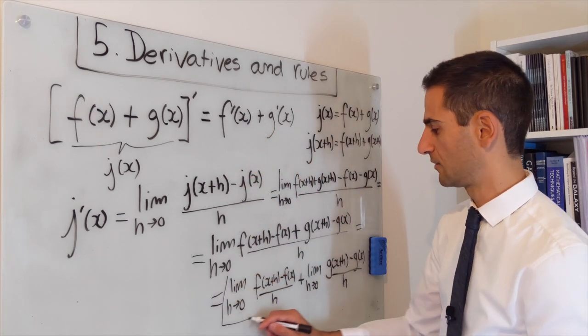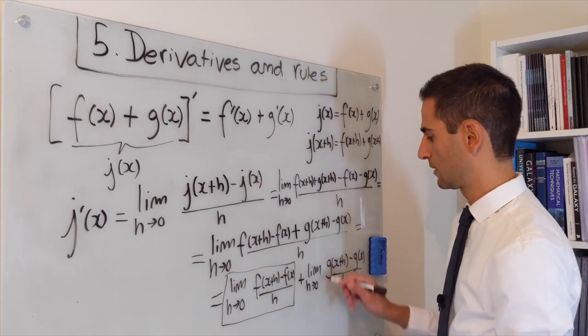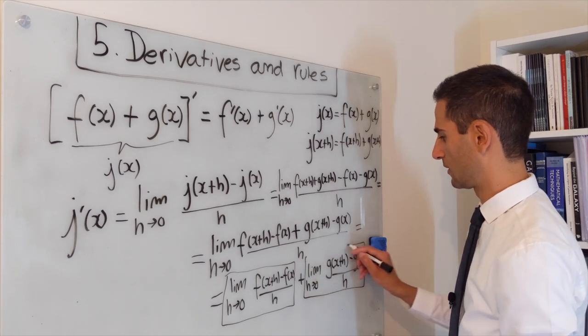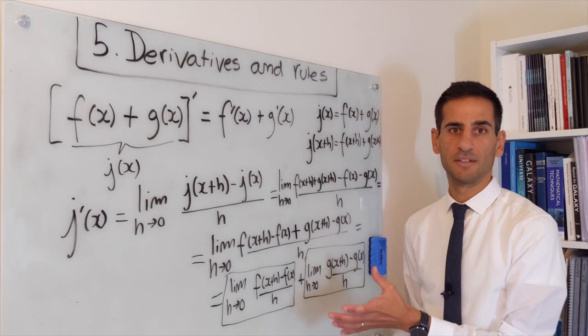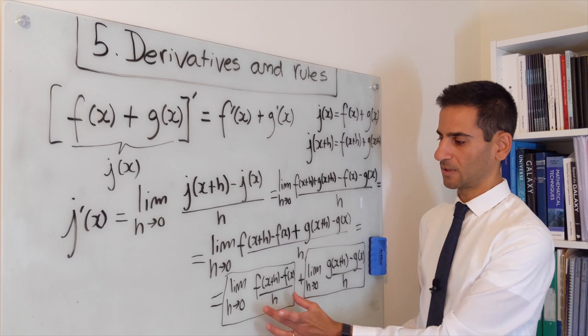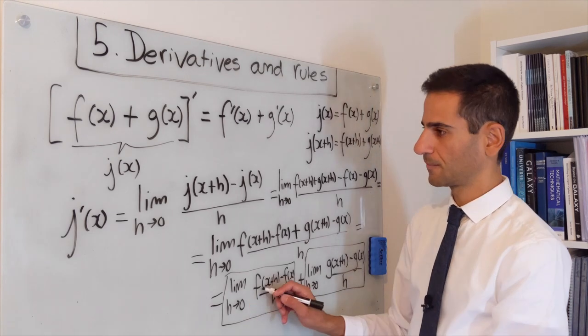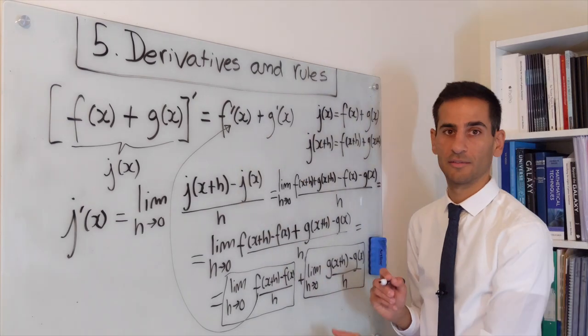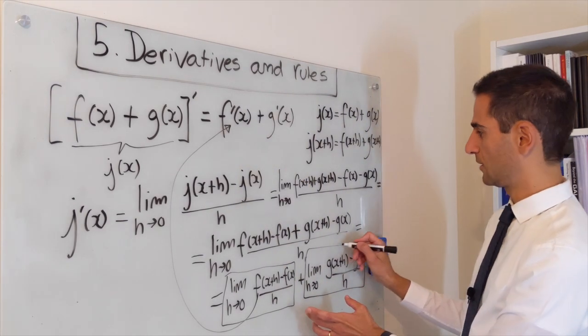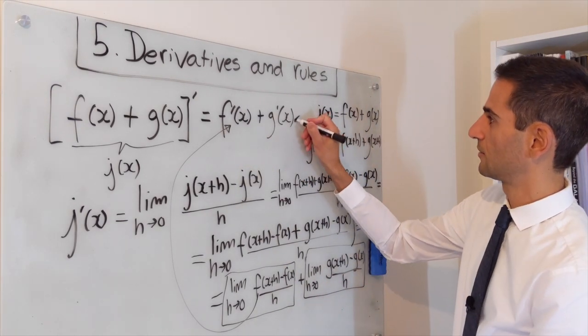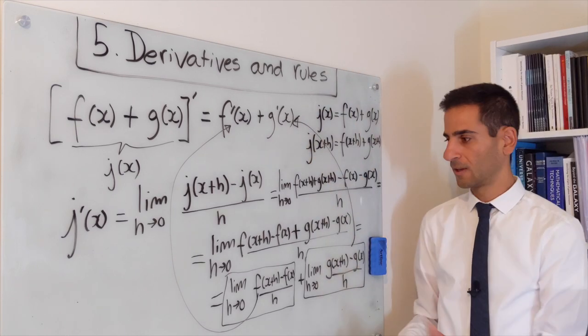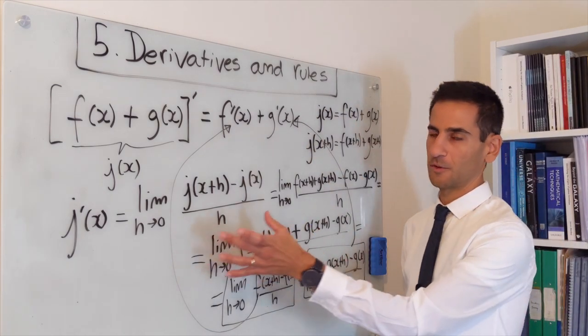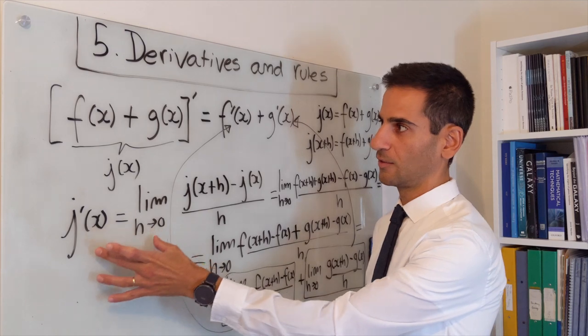And clearly by using differentiation from first principles we can see that this term is actually the derivative of function f and this term is the derivative of function g. So we have demonstrated from first principles that the derivative of a sum of a function is the sum of the individual derivatives.